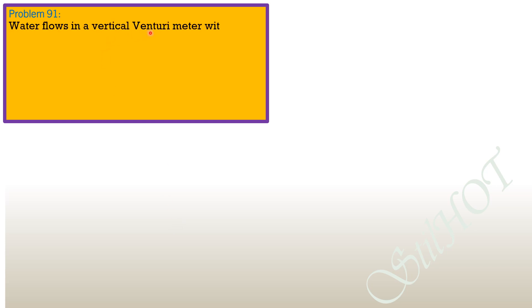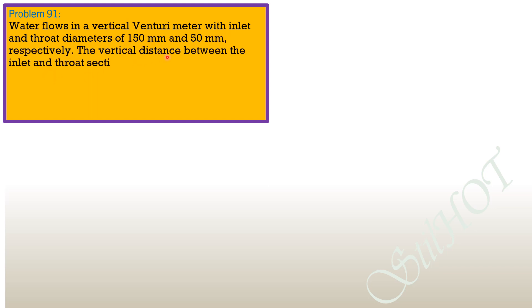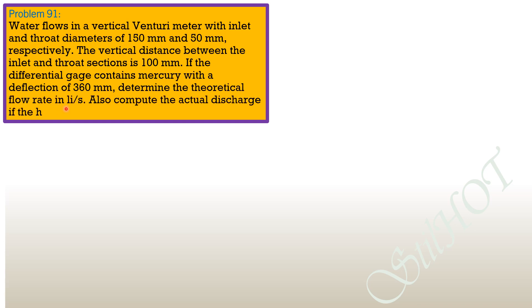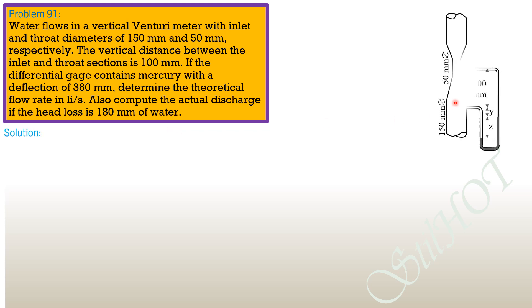Problem 91: Water flows in a vertical venturi meter with inlet and throat diameters of 150 mm and 50 mm respectively. The vertical distance between inlet and throat sections is 100 mm. If the differential gauge contains mercury with a deflection of 360 mm, determine the theoretical flow rate in liters per second. Also compute the actual discharge if the head loss is 180 mm of water.